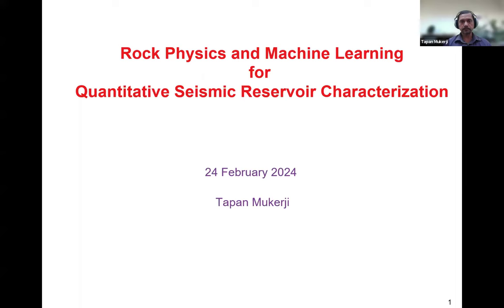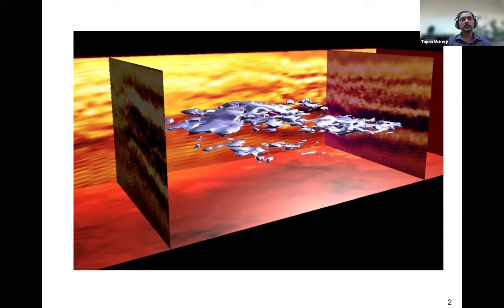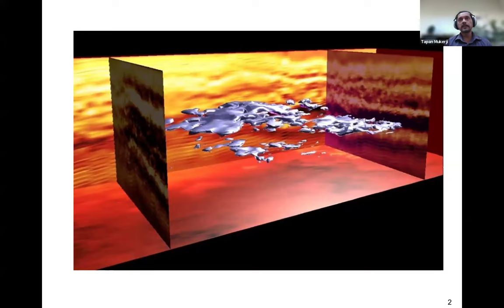Here's an example of a result of a quantitative seismic interpretation workflow where the seismic data along with well logs, geology, and rock physics models have been used to come up with an interpretation. What you see are not geobodies of reservoir bodies, but isoprobability maps — locations where it is highly probable that we have a good reservoir. In quantitative seismic interpretation we have to give not only the deterministic interpretation but also the probability of that interpretation; we have to quantify the uncertainty. That's what makes it quantitative.